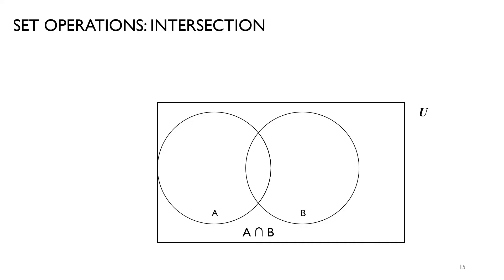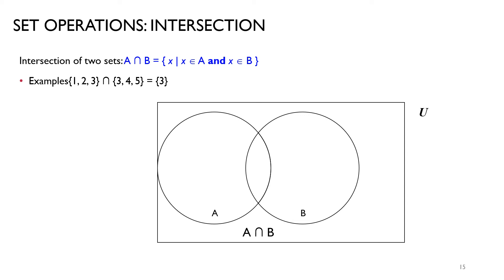Next is the set operation of intersection. Intersection means you have to find the common elements. Taking the same example, if A = {1, 2, 3} and B = {3, 4, 5}, the common element is 3. So A ∩ B = {3}. The shaded red portion in the Venn diagram gives you the intersection.